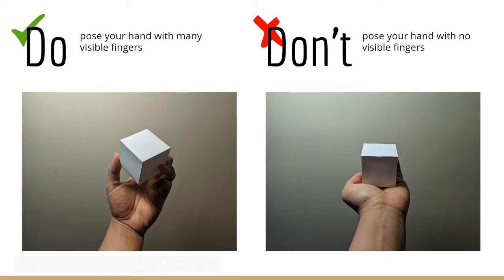Next, do pose your hand so that many of your fingers are visible. What I don't want you to do is hide most of your fingers behind your object. Don't pose your hand with no visible fingers — it's not an interesting shot and it's boring to draw just one part of your thumb and palm. You're kind of playing at being a hand model. You want to show some interesting angles, an interesting grip, and actually pose your hand in a good way.